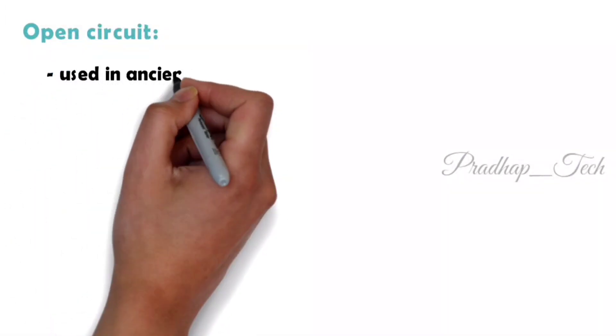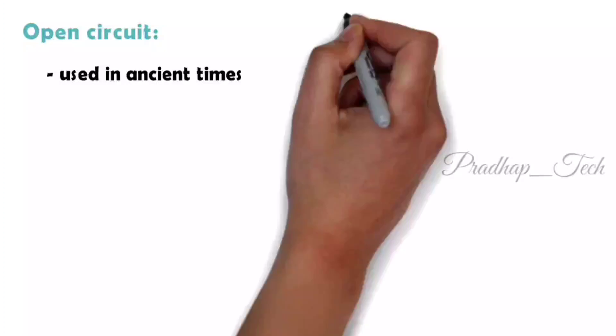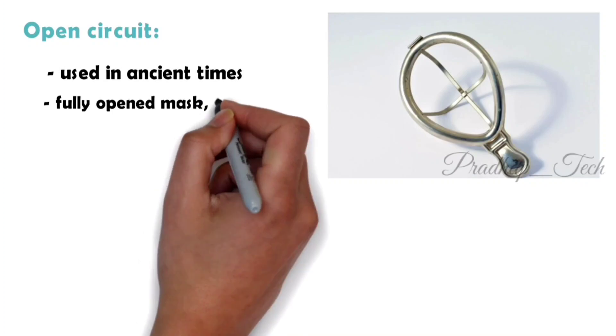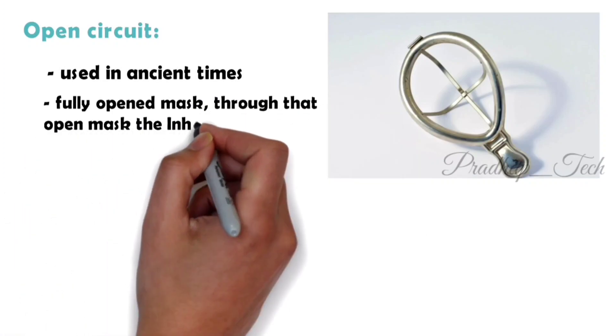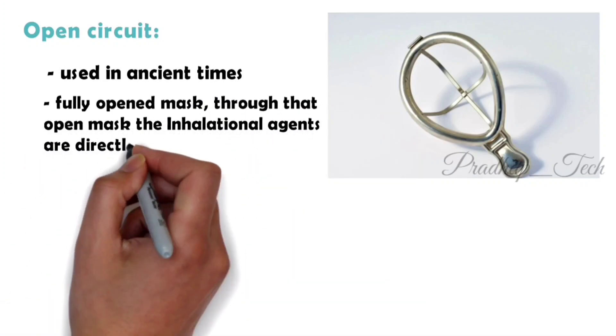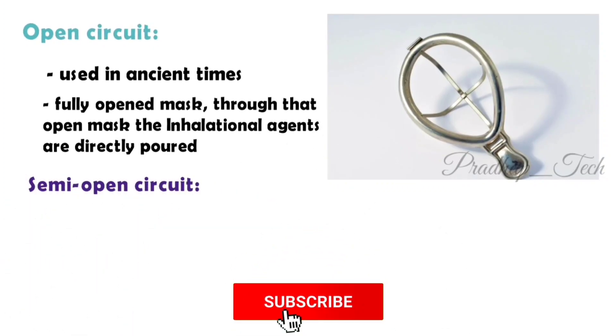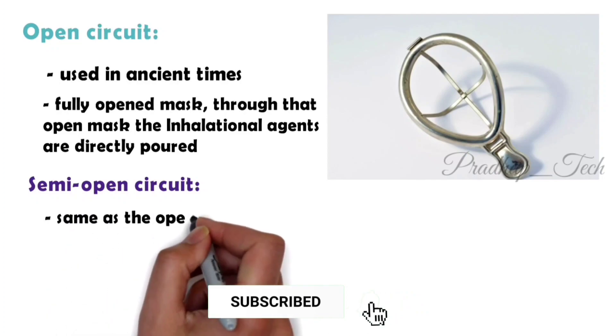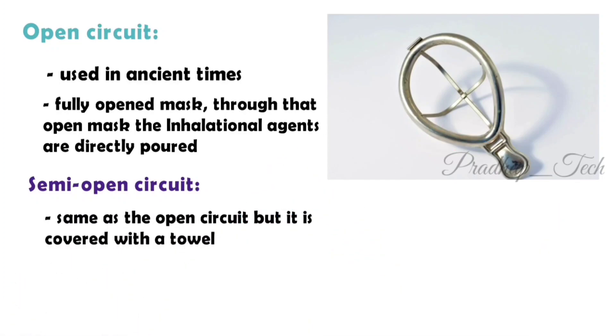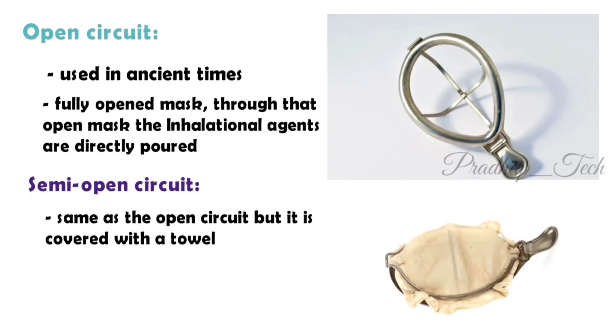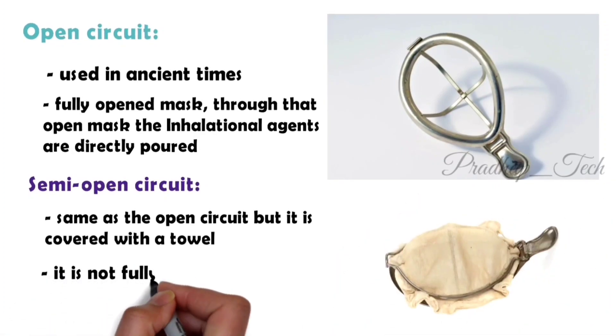Open circuits are those which were used in ancient times. It has a fully opened mask through which the inhalational agents are directly poured. The semi-open is the same as the open circuit but it is covered with a towel, so it is not fully opened. That's why this circuit is called a semi-open circuit.